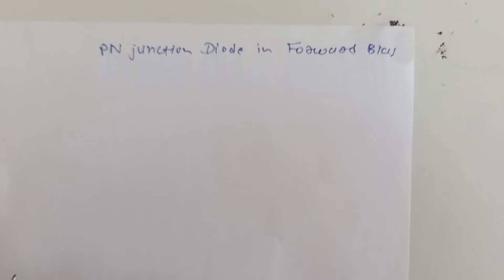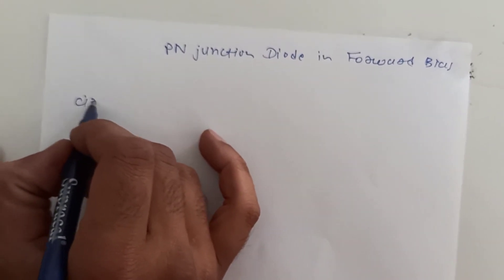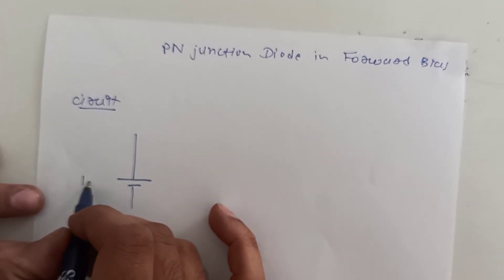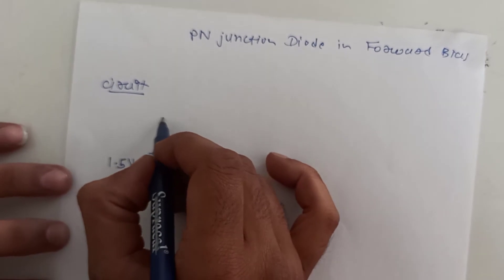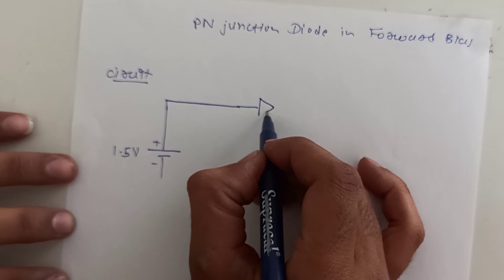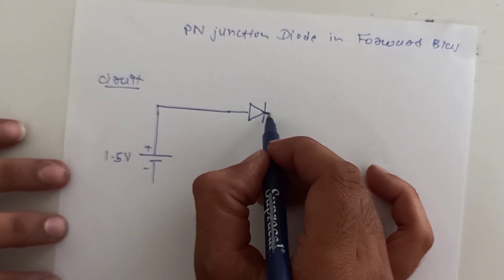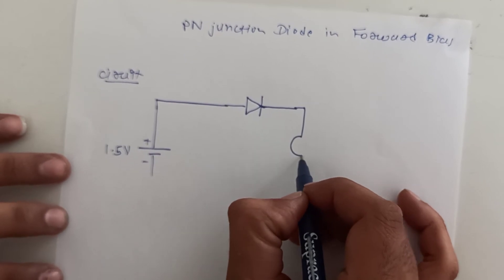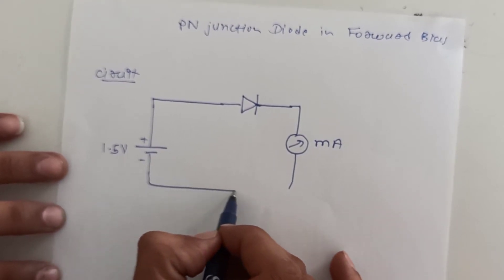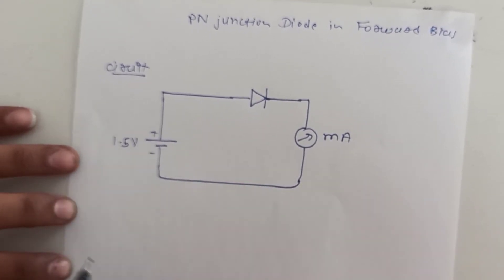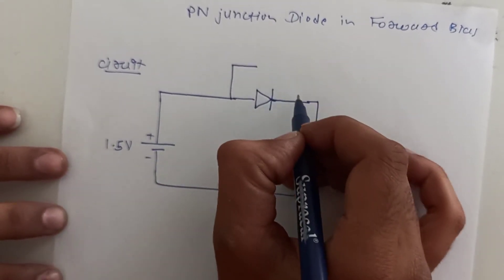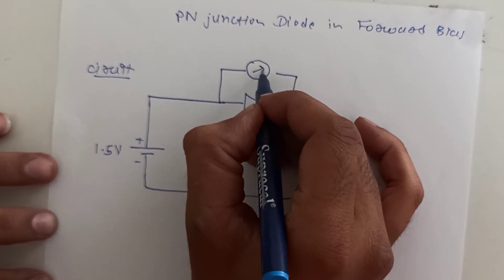In forward bias, the circuit is like this: the battery is 1.5V. The positive terminal goes to the positive of the PN Junction Diode, and the negative terminal goes to the milliammeter, which is connected in series with the PN Junction Diode and connected to the negative of the battery. The voltmeter is connected in parallel with the PN Junction Diode.